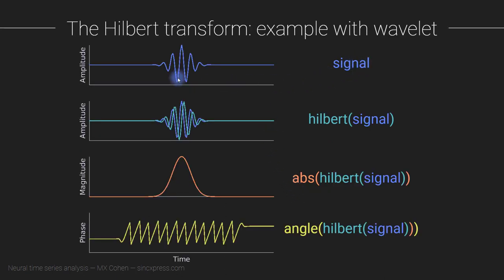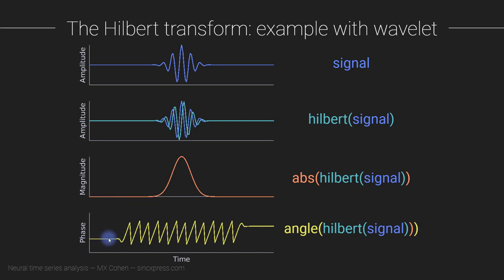Let me show you a more concrete example. Here we have a real-valued signal. Here is the Hilbert transform of this signal — you can see it has a real part and an imaginary part. Then we can take the magnitude of the Hilbert transform and we get this envelope, the analytic envelope or amplitude envelope. We can also extract the angle from the Hilbert transform, and that gives us this phase angle time series. Similar to what you learned in the section on estimating phase, these phase values out here where the signal is essentially zero are basically meaningless — the amplitude is near zero and so it's really not possible to estimate the phase values with any real accuracy.